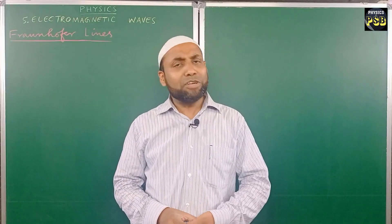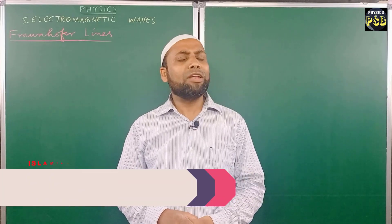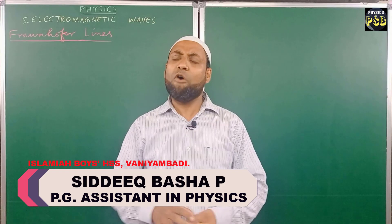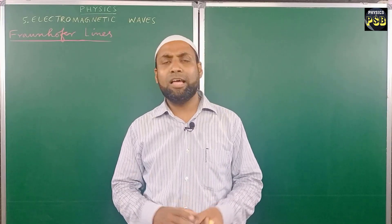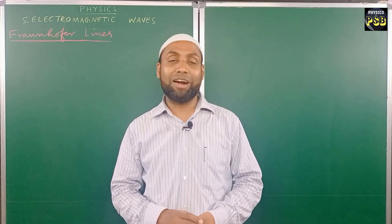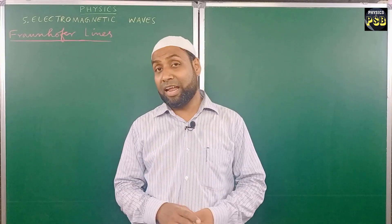Assalamu alaikum. In this video we discuss Fraunhofer lines. When a solar spectrum is observed closely, it is found that it contains a large number of dark lines. These dark lines are referred to as Fraunhofer lines.